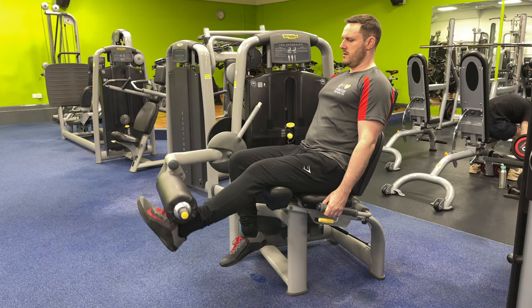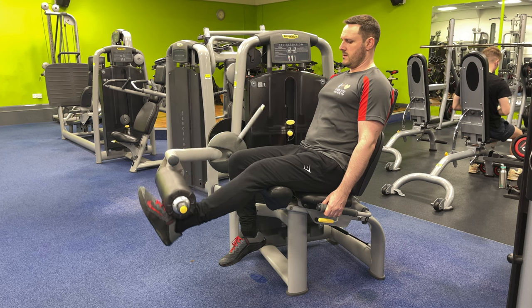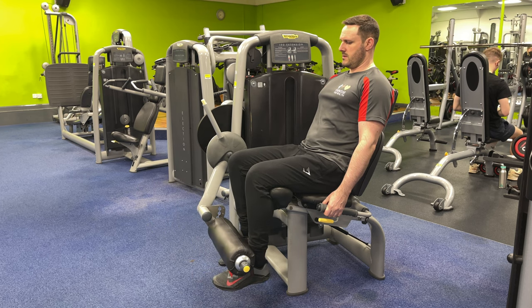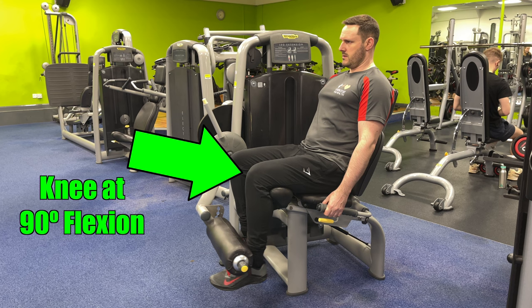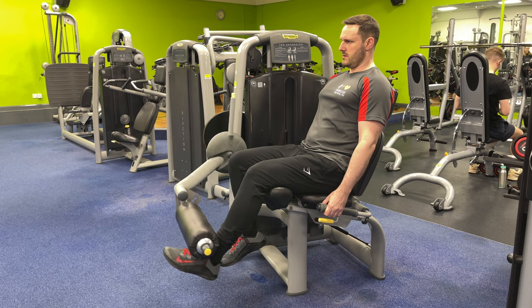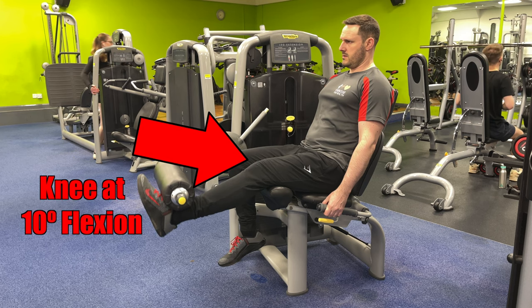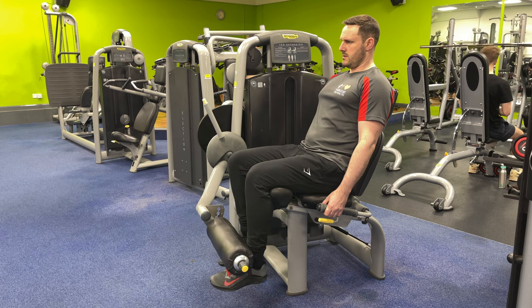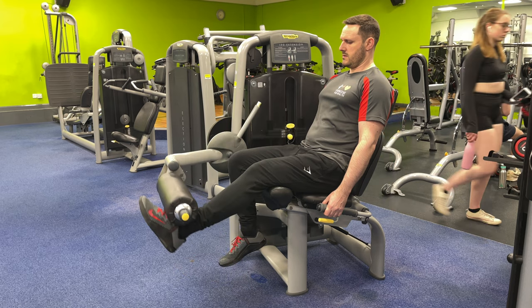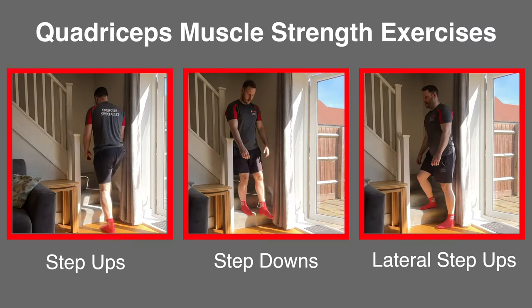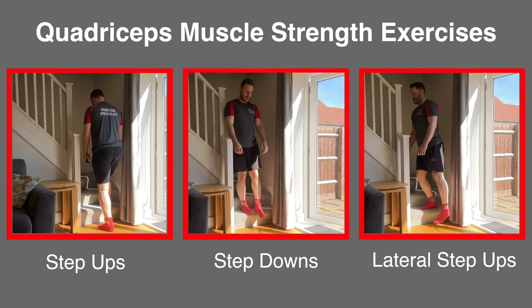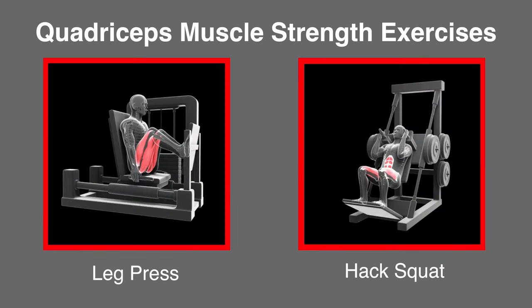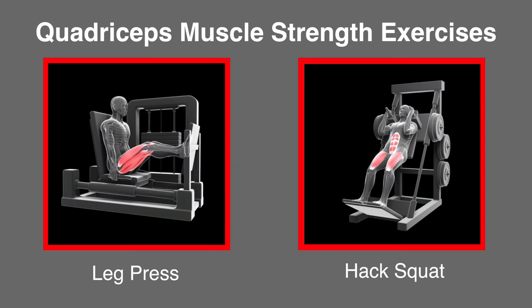The mid-stage rehab is also a time when you can start performing open chain exercises. A leg extension machine is considered safe to really isolate the quadriceps muscles. There is zero load on the ACL when the knee is extended between 90 and 60 degrees. The shearing forces between 10 and 30 degrees are only about 3% of the load placed on it during a leg extension, providing minimal risk to the ACL while giving good quad stimulation. Other exercises can include step-ups or step-downs in varying directions, or using a leg press or hack squat machine in the gym.